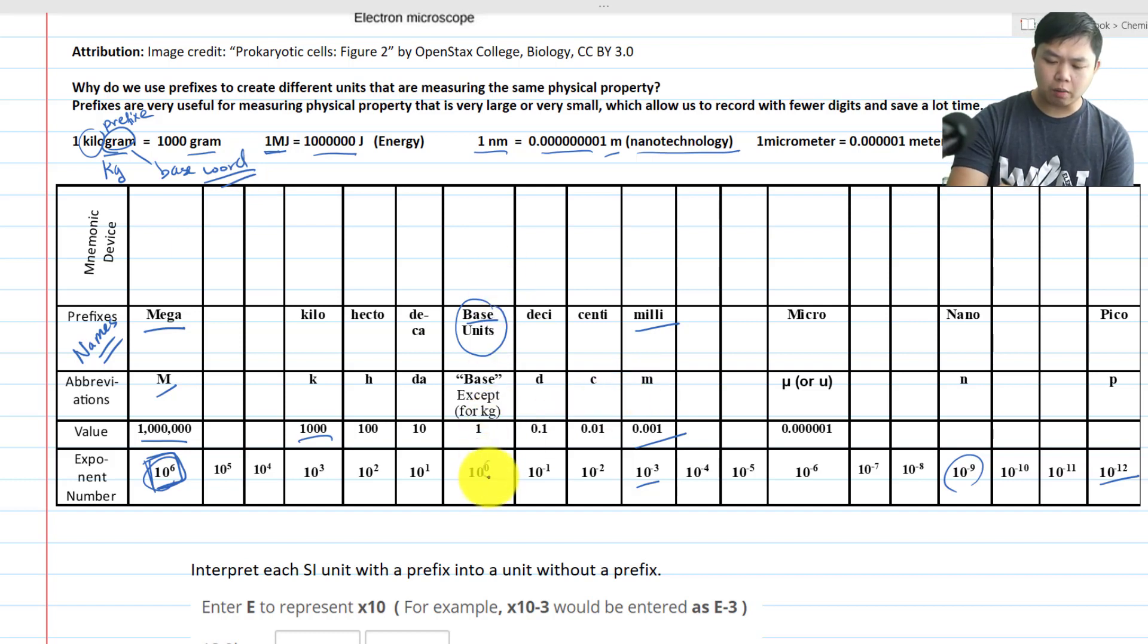And for base, of course, it starts with 0. And anything to the 0 power is equal to 1. And then, that's Deci, D, 10 to the negative 1. Centi, C, 10 to the negative 2.